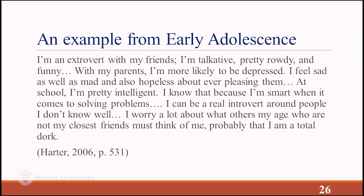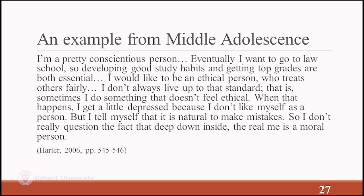Here's an early adolescence example from Harter: 'I'm an extrovert with my friends — talkative, rowdy, and funny. With my parents I'm more likely to be depressed, sad and mad, hopeless about ever pleasing them. At school I'm pretty intelligent. Around people I don't know well, I can be a real introvert. I worry a lot about what others my age must think of me — probably that I am a real dork.' She starts with extrovert then describes being a real introvert — we see the clash.